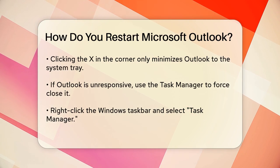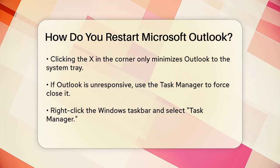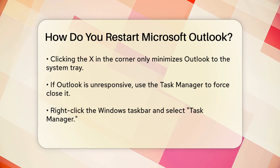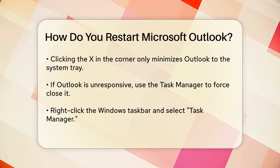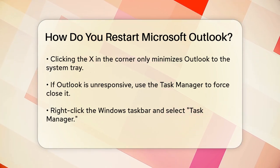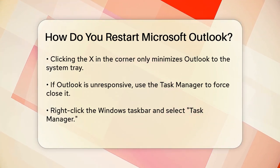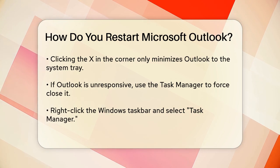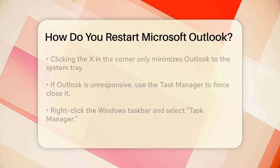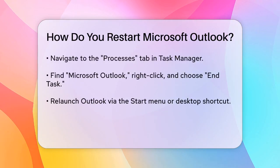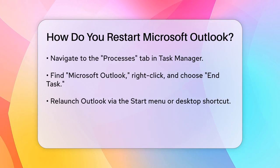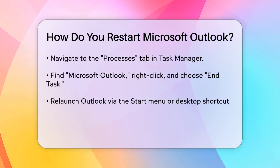However, if Outlook is frozen and you can't access these options, you'll need to use the Task Manager. Right-click on your Windows taskbar, select Task Manager, and then go to the Processes tab. Here, find Microsoft Outlook, right-click on it, and choose End Task. This will force Outlook to close.